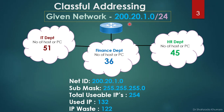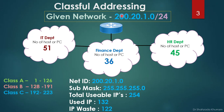First, we need to determine which class this IP belongs to. We always check the first octet. Class A is 1–126, Class B is 128–191, and Class C is 192–223. Since 200 falls in Class C, the default subnet mask is 255.255.255.0.